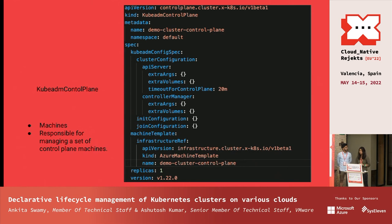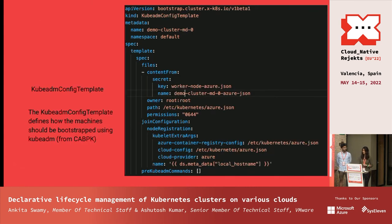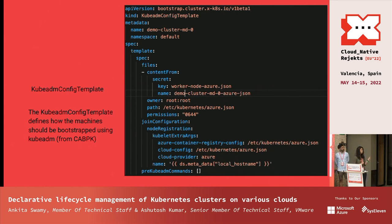The KubeadmControlPlane API can ingest control plane configuration flags for installing Kubernetes components like the API server and controller manager. It is also responsible for initializing the Kubernetes control plane with services like etcd. KubeadmConfigTemplate defines how machines should be bootstrapped and joined to the cluster using Kubeadm, and this configuration is referenced back in the MachineDeployment.